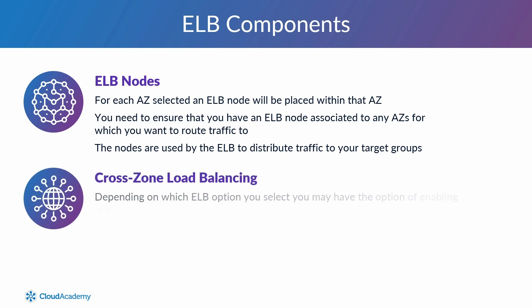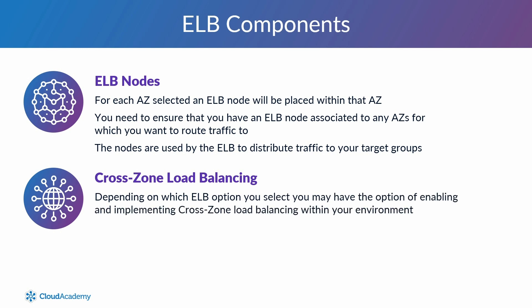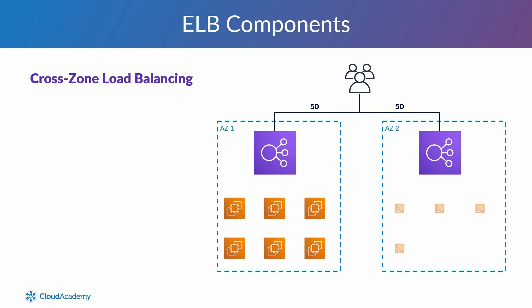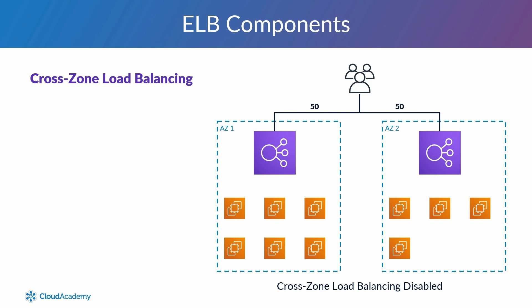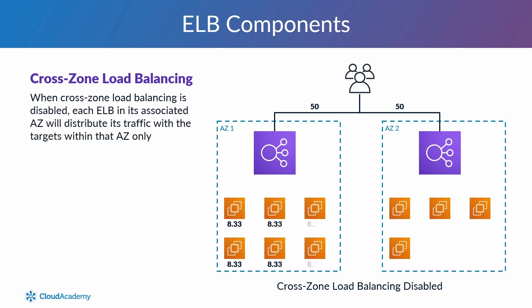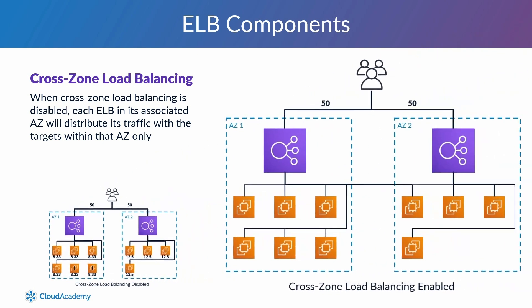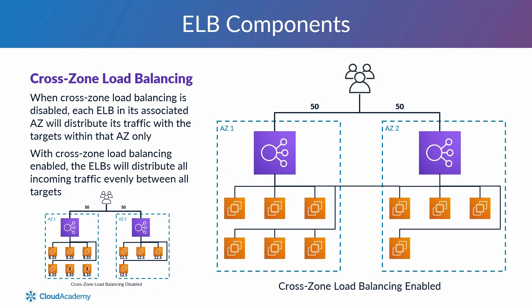Cross-zone load balancing: depending on which ELB option you select, you may have the option of enabling cross-zone load balancing. Suppose you have two availability zones activated for your ELB, with each associated load balancer receiving an equal amount of traffic. One availability zone has six targets and the other has four. When cross-zone load balancing is disabled, each ELB in its associated AZ will distribute its traffic with the targets within that availability zone only, resulting in an uneven distribution of traffic for each target across the availability zones. With cross-zone load balancing enabled, regardless of how many targets are in an associated availability zone, the ELBs will distribute all incoming traffic evenly between all targets, ensuring each target across the availability zones has an even distribution.